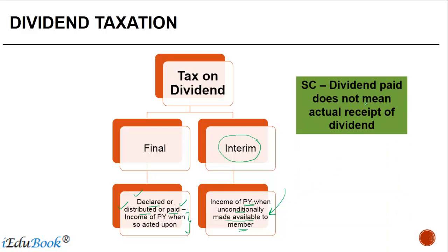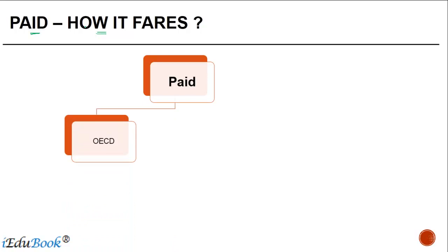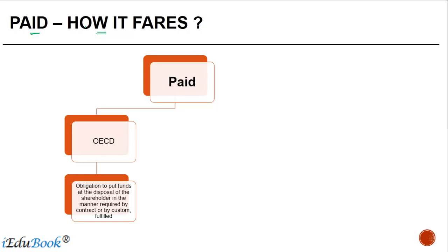It is the point when the interim dividend is unconditionally made available to the shareholder that the taxation of such dividend gets triggered. The Supreme Court has held that 'dividend paid' does not mean the actual receipt of dividend. As per the OECD, 'paid' would typically mean the point when the obligation to put funds at the disposal of the shareholder in the required manner — by contract or by custom — is fulfilled.